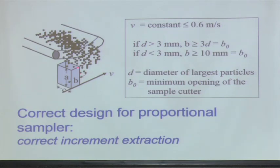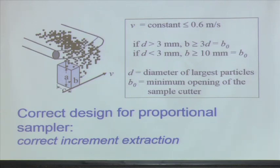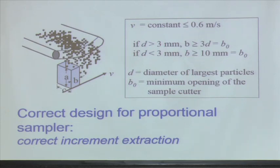For slurry it could be different — I am talking about dry powdered samples. What should be the dimensions? If D (the largest particle size) is greater than 3 mm, then B (the width/spacing of the opening) should be greater than or equal to 3D — meaning it should accommodate at least 3 particles of that size simultaneously. If D is less than 3 mm, B should be greater than or equal to 10 mm. So if the largest size is 5 mm, the width should be at least 15 mm. D is the diameter of the largest particle; B₀ is the minimum opening of the sample cutter.